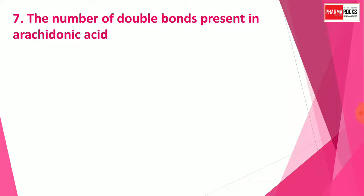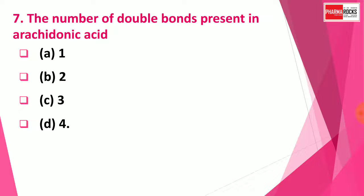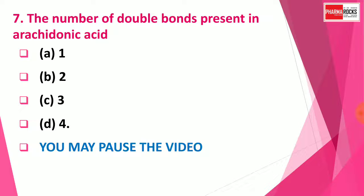Question 7: The number of double bonds present in arachidonic acid are — Option A: One, Option B: Two, Option C: Three, Option D: Four. You may pause the video to think about the answer. The correct answer is Option D: Four. Four double bonds are present in the structure of arachidonic acid.